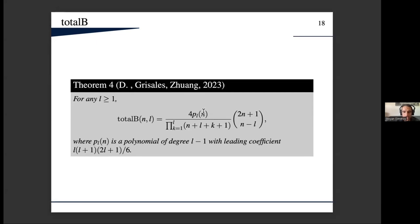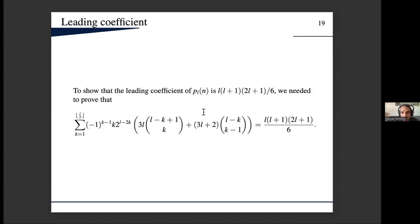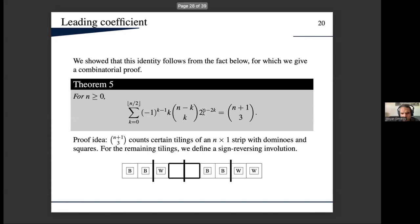But I'm mentioning this result because of the leading coefficient, for which we proved that it's given by this cubic polynomial of l, and we use that proof later on. In particular, this identity boils down to proving that identity, and this one has a nice interpretation. We were happy with that combinatorial proof for this theorem, and we use that later as I said.